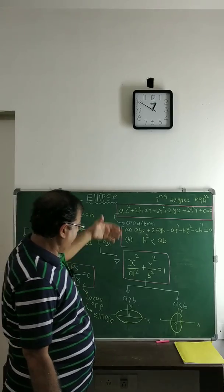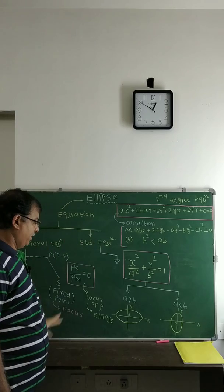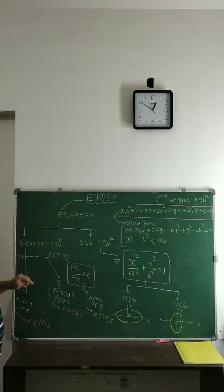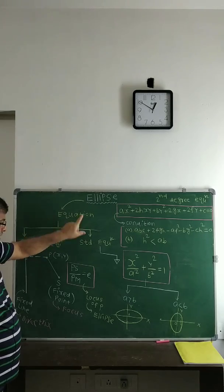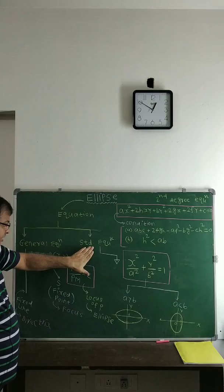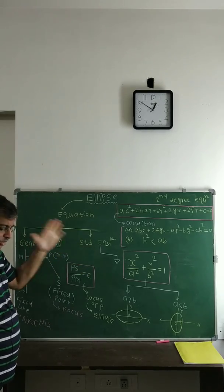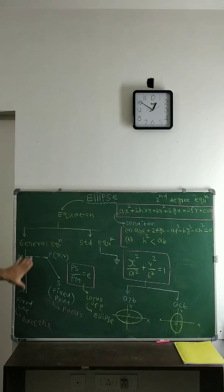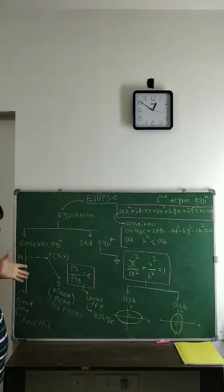Now, if we know an equation represents an ellipse, there are two ways to write the equation of an ellipse. The first method is called the general equation and the second is called the standard equation. A standard equation is nothing but a particular case of the general equation. Let's now recall the basic definition of conics to derive the general equation of an ellipse.